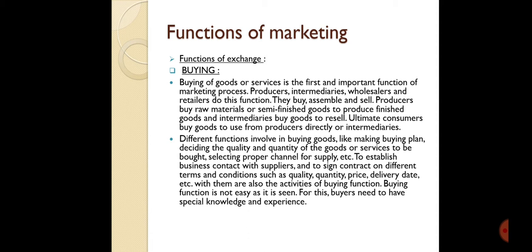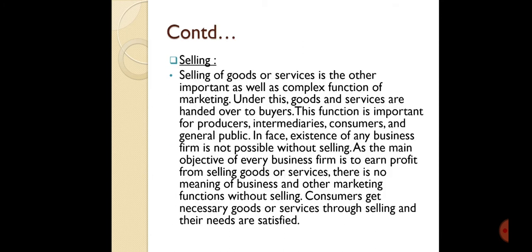Intermediaries buy finished goods to resell them either directly or through other intermediaries. The participants in buying are: producers, intermediaries like wholesalers and retailers, and ultimate consumers. Producers buy raw materials, intermediaries buy finished goods to resell, and consumers buy goods from producers directly or through intermediaries.